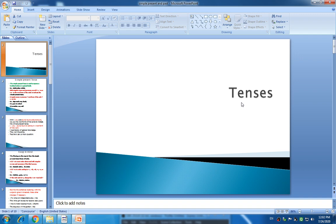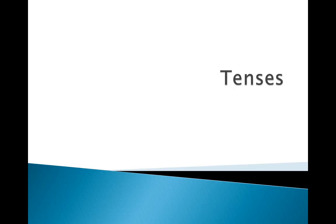Each tense indicates the connection between two or more time periods and the exact present time in which an activity occurs. Tenses can be used to create different meanings from the same word, and also help the listener understand the meaning behind the story. Also, tenses are used to communicate about an event and its location at that time.